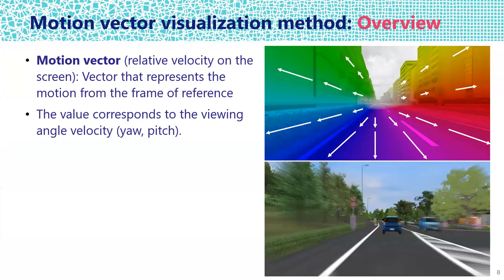Proposed method. Motion vector represents the motion from the frame of reference. The value corresponds to the viewing angle velocity. When the depth from the camera to an object differs, objects far away from the camera do not move so much, and objects near the camera move greatly.